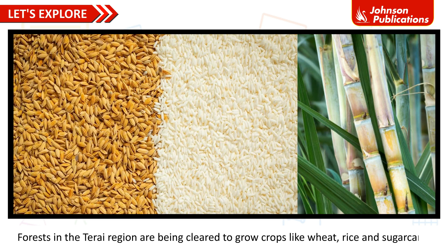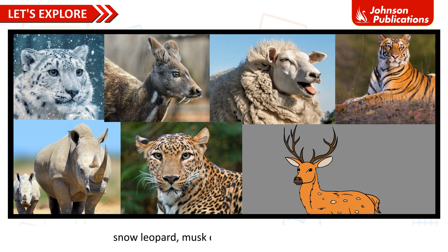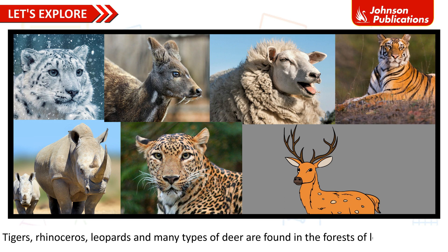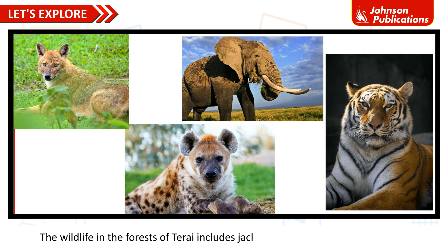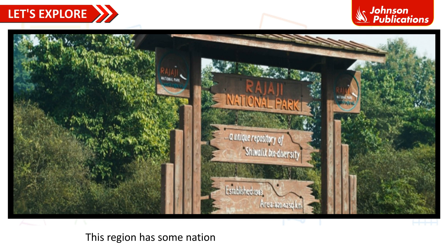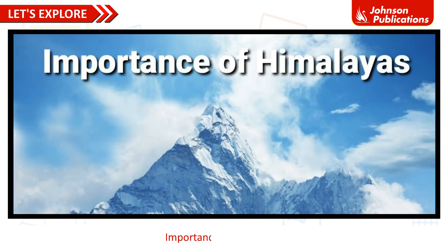Wildlife in the Greater Himalayas includes yak, snow leopard, musk deer, wild sheep, and goats. Tigers, rhinoceros, leopards, and many types of deer are found in the forests of the Lesser Himalayas. The Terai region is home to jackals, hyenas, elephants, and tigers, and includes national parks like Jim Corbett National Park and Rajaji National Park.